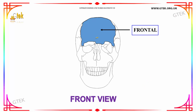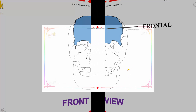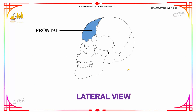This is how the frontal bone looks like from the front view of the human skull. The diagram shows the lateral view of the human skull, and the frontal bone in the lateral view is like this. The portion shaded in blue is the frontal bone.